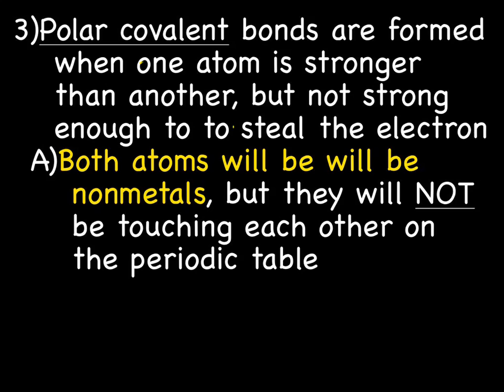Okay, and we have two different types of covalent bonds. The first type we're going to talk about is called the polar covalent bond. And a polar covalent bond is formed when one atom is stronger than another, but not quite strong enough to steal it. So they're sharing the electrons, but maybe not quite equally.